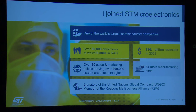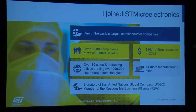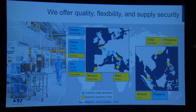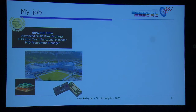What is also very important is that ST has its own manufacturing of silicon, so we can make new devices, create new processes, and develop new ideas internally. Manufacturing is mainly in Europe — France and Italy are the biggest sites — but there is also some manufacturing in Singapore. My job: I was an advanced SPAD pixel architect until a few months ago, and I also became a pixel manager and team manager.